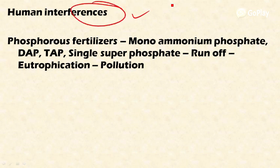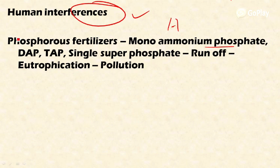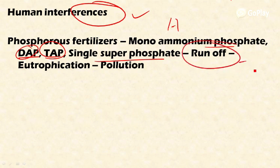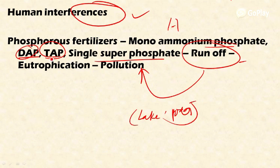Human beings interfere in the phosphorus cycle by producing phosphorus through the production of fertilizers used in agricultural operations. Phosphorus fertilizers like monoammonium phosphate (MAP), diammonium phosphate (DAP), triammonium phosphate, and single superphosphate are important sources of phosphorus used in agriculture. These add more phosphorus to the ecosystem, which runs off from agricultural lands through soil and water erosion into water bodies like lakes and ponds, leading to eutrophication.